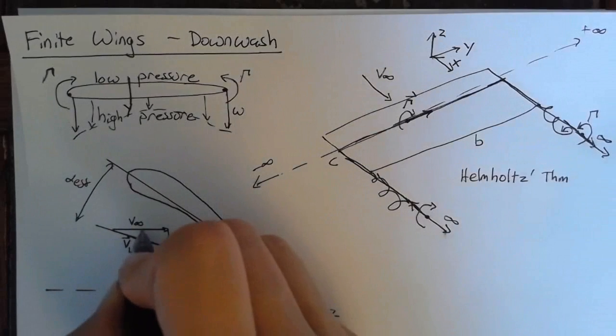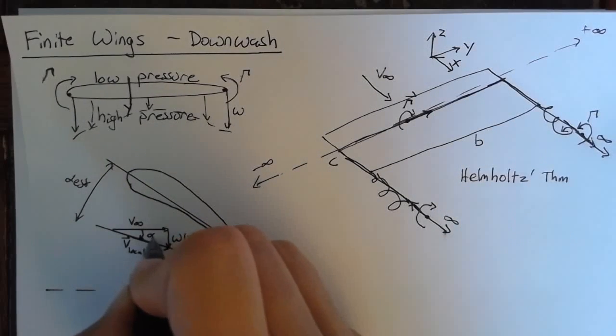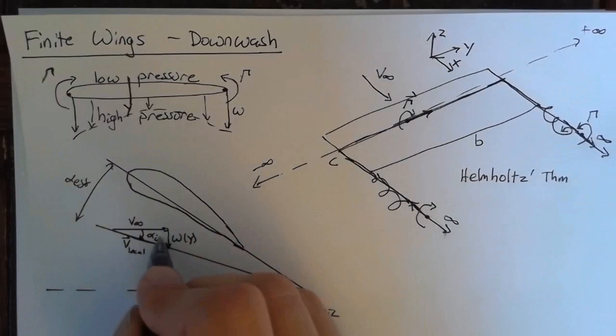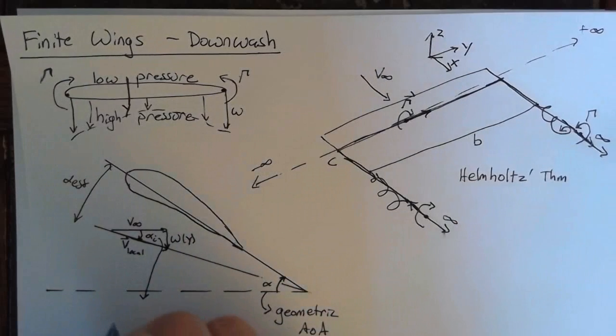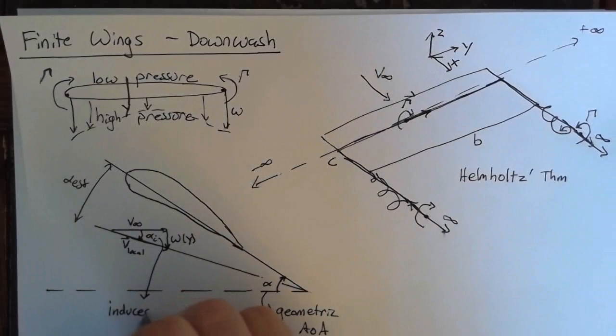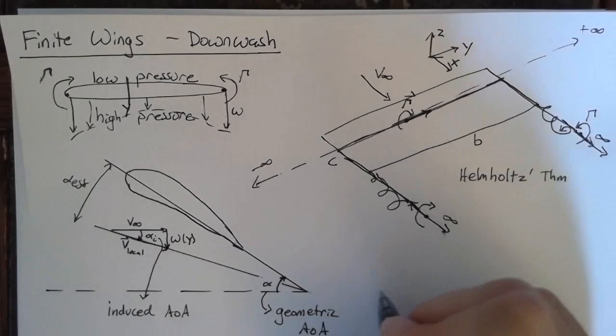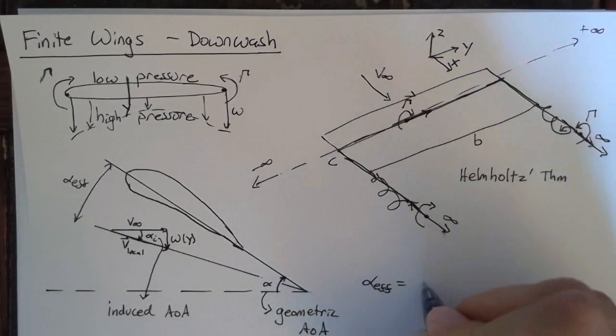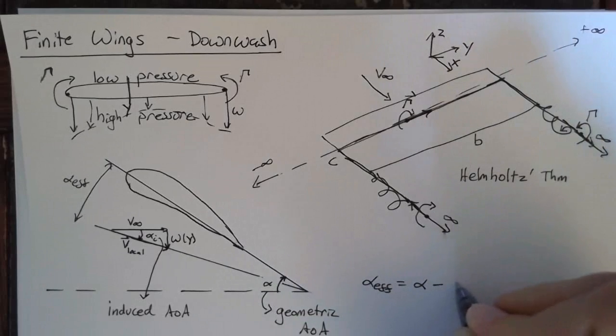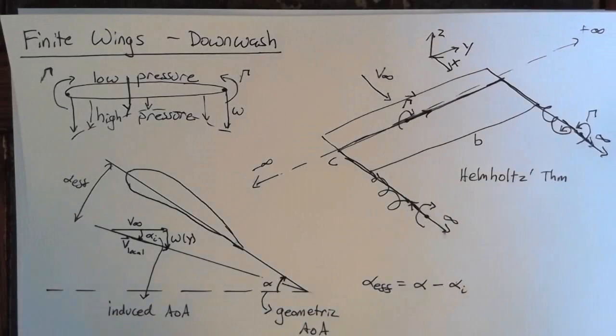And this angle is alpha sub i. And once again, we'll give it a name. This is the induced angle of attack. So in very simple terms, the effective angle of attack is going to be equal to our geometric angle of attack minus our induced angle of attack.